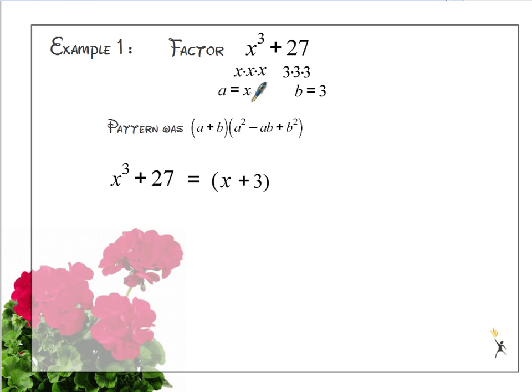For my middle term, I need to multiply them together. So x times 3 just gives me 3x.